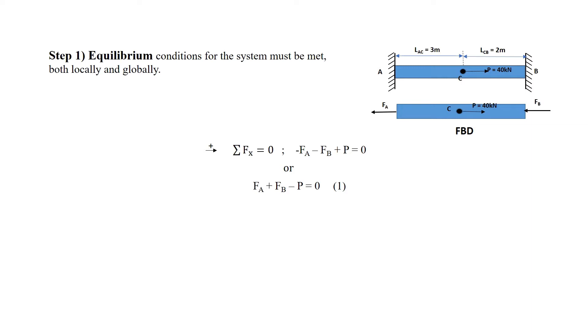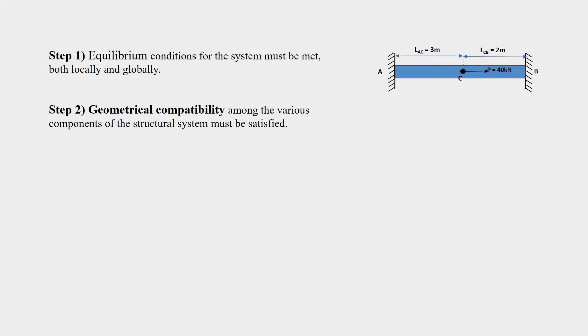Consequently, in this problem, the equilibrium equations are not sufficient to determine the two reactions on the bar. Now, to establish an additional equation needed for a solution, we go to step 2.